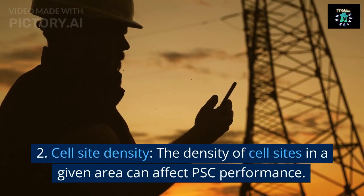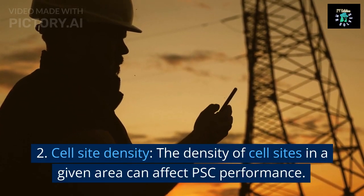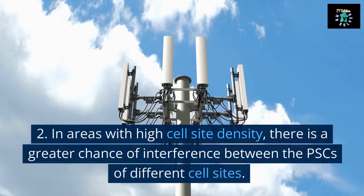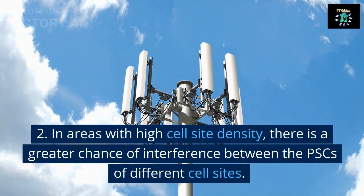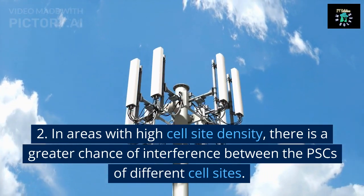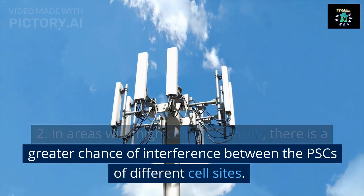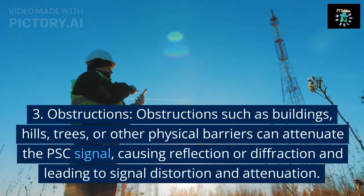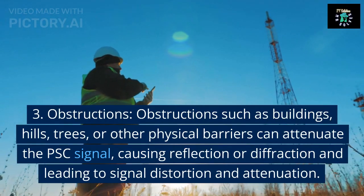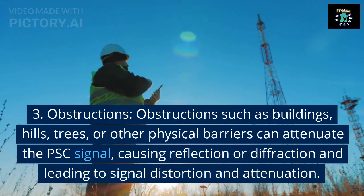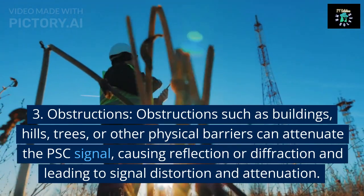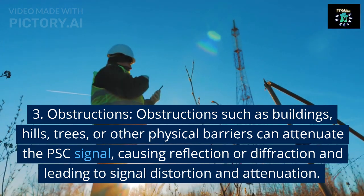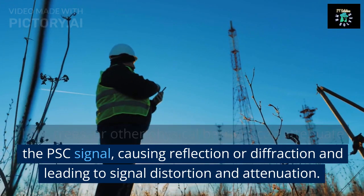The density of cell sites in a given area can also affect PSC performance. In areas with high cell site density, there is a greater chance of interference between the PSCs of different cell sites. Additionally, obstructions such as buildings, hills, trees, or other physical barriers can attenuate the PSC signal, causing reflection or diffraction and leading to signal distortion and attenuation.